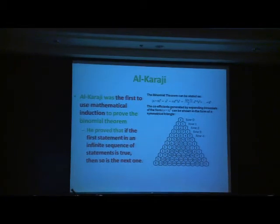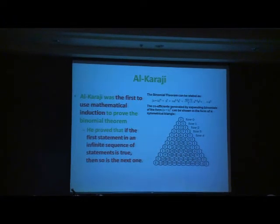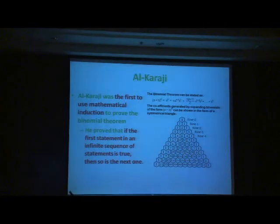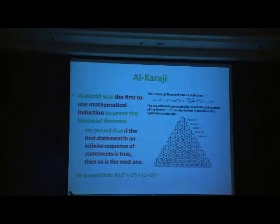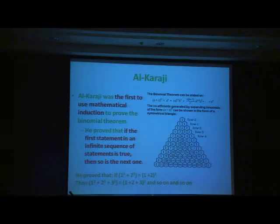Al-Karaji was the first to use mathematical induction. What he said was: if the first statement in a series is true, then so are the subsequent ones. He proved that 1³ + 2³ equals nine, which equals (1+2)². If this is correct, then so is the next: 1³ + 2³ + 3³ equals (1+2+3)², which gives 36.